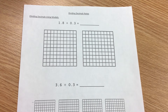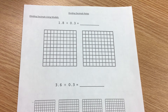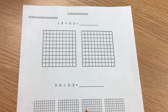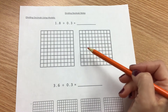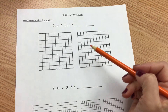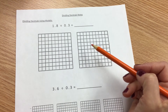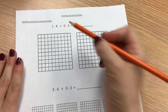Today we are going to learn how to divide decimals using models. Our problem says 1 and 8 tenths divided by 3 tenths. We're going to take this 1 and 8 tenths and divide it up by 3 tenths. The first thing we're going to do is shade in 1 and 8 tenths. We have two wholes right here and we're only going to shade 1 and 8 tenths of it.